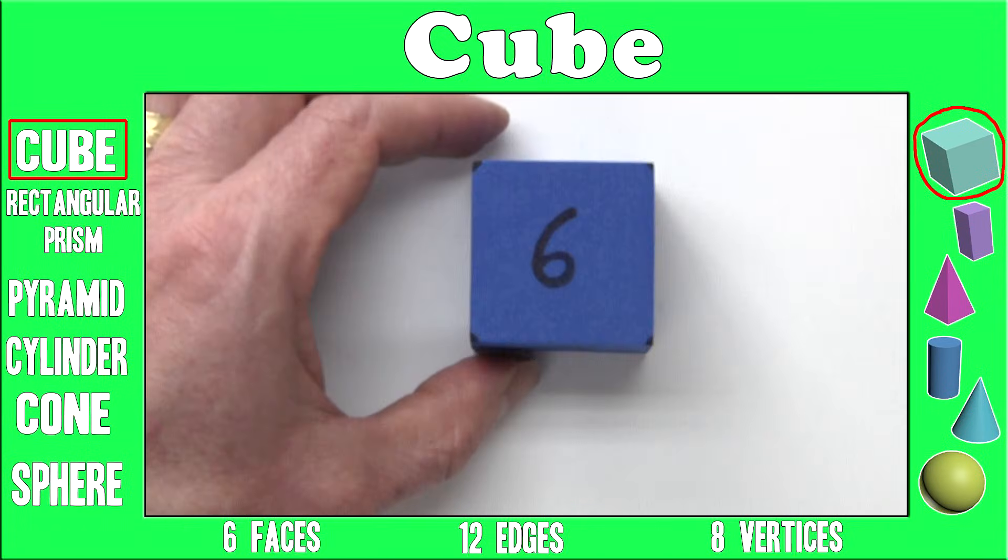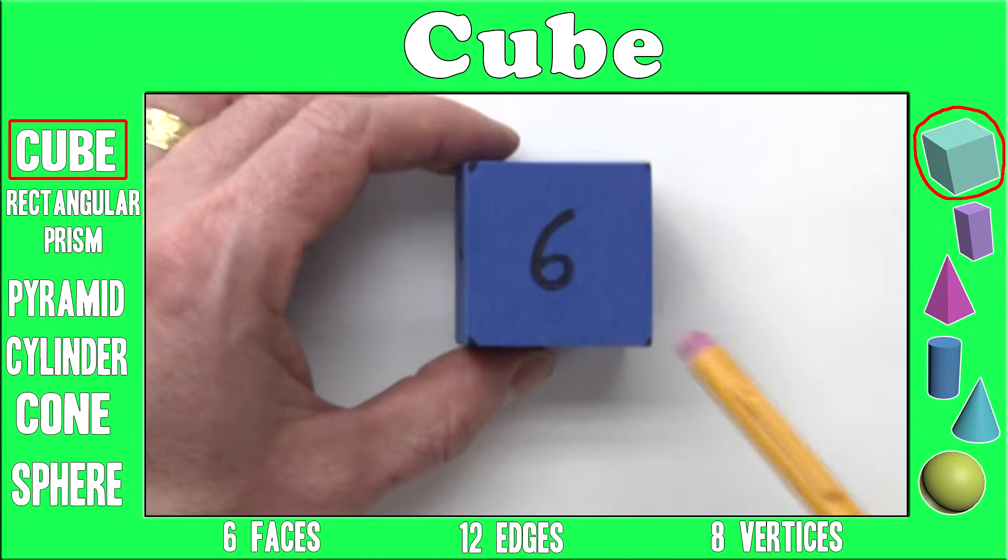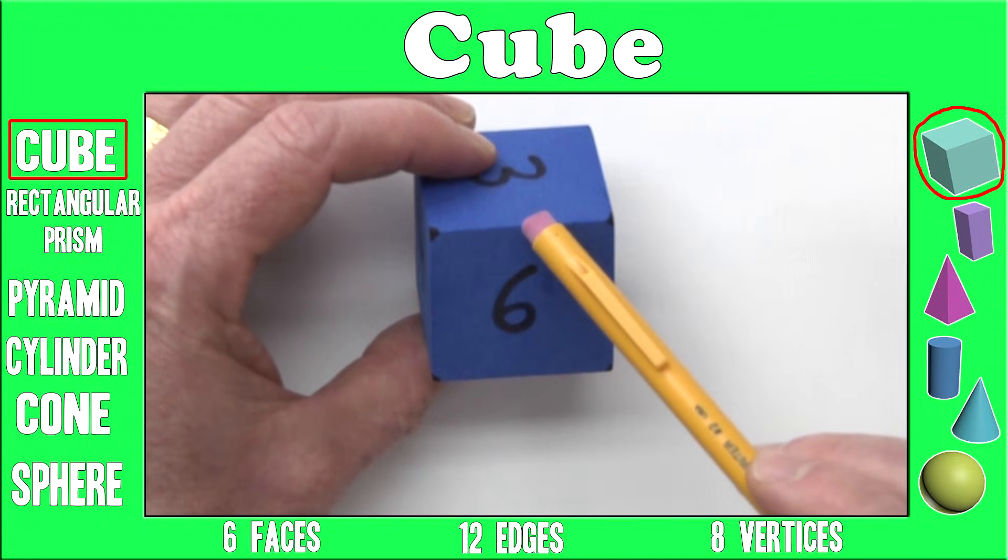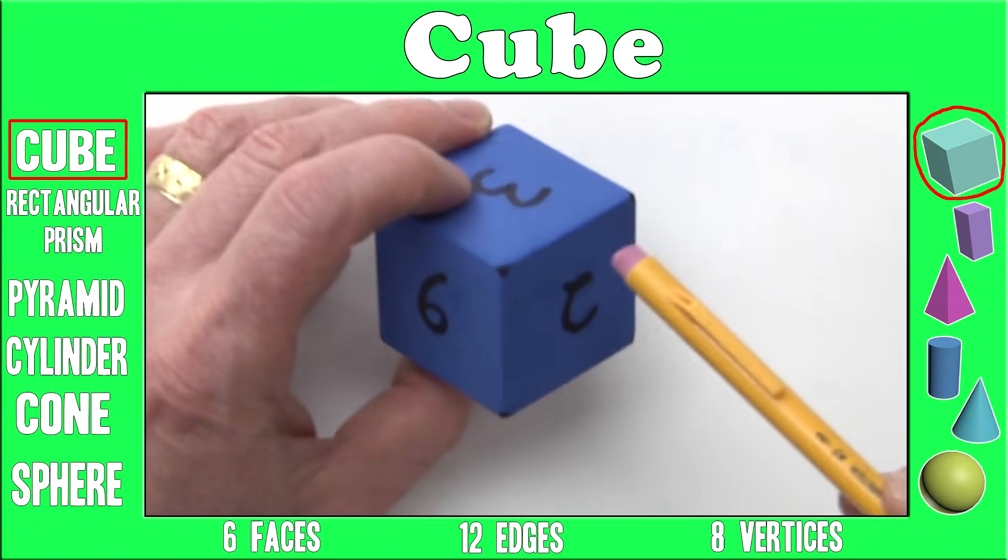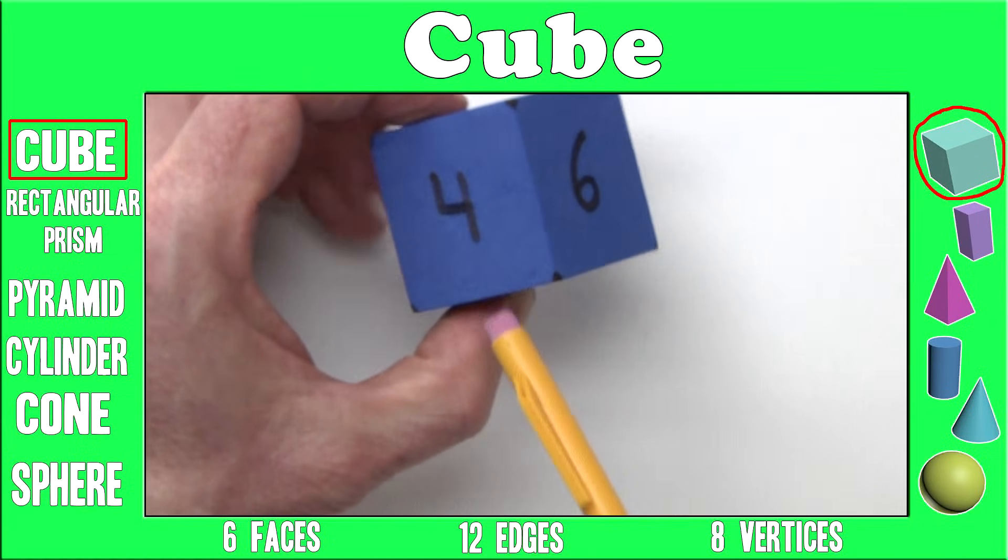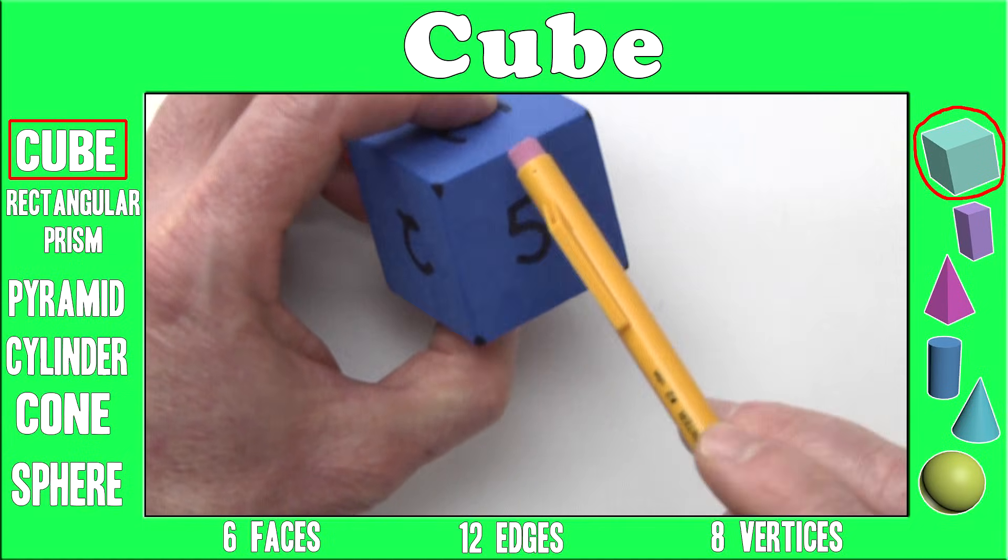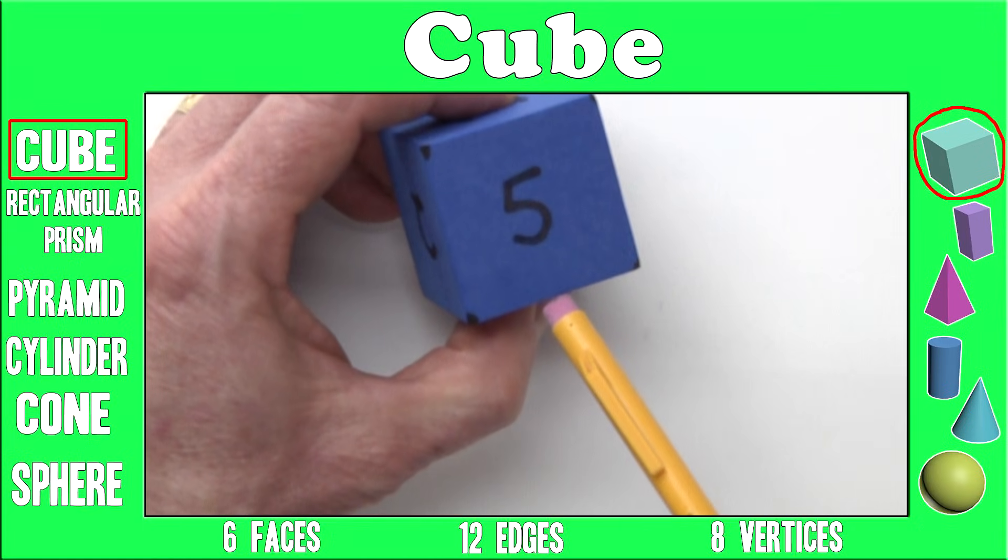This is an edge. A cube has 12 edges. One, two, three, four, five, six, seven, eight, nine, ten, eleven, twelve.